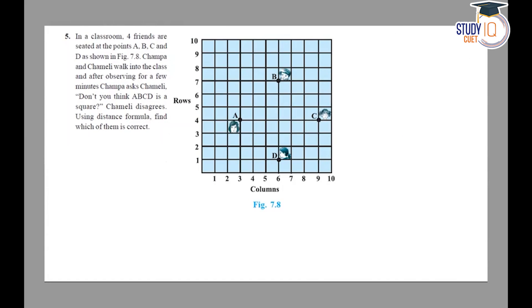Hello students. This is question number 5 from exercise 7.1 of NCERT class 10. In this question, we are given that in a classroom, 4 friends are seated at the points A, B, C and D.